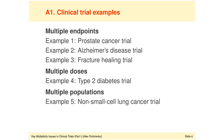These examples will help us classify multiplicity problems arising in clinical drug development, and they will also illustrate multiplicity adjustment methods. The first group of clinical trial examples deals with the case of multiple endpoints, and there are three examples in this group.